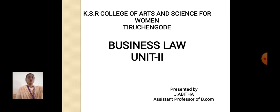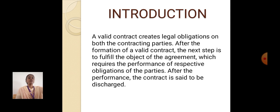Now, I am going to discuss about the topic of Business Law, Unit 2. Introduction: A valid contract creates legal obligation on both the contracting parties. After the formation of a valid contract, the next step is to fulfill the object of the agreement, which requires the performance of respective obligations of the parties. After the performance, the contract is said to be discharged.